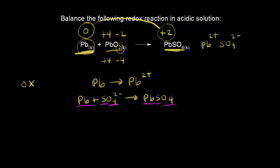Next, we balance the charge by adding electrons. On the left side we have two negative charges, and on the right side the overall charge is zero. To make the charges equal, we add two electrons to the right side — now the charges are balanced. Remember, oxidation is loss of electrons. This is the half-reaction that occurs at the anode of our battery.